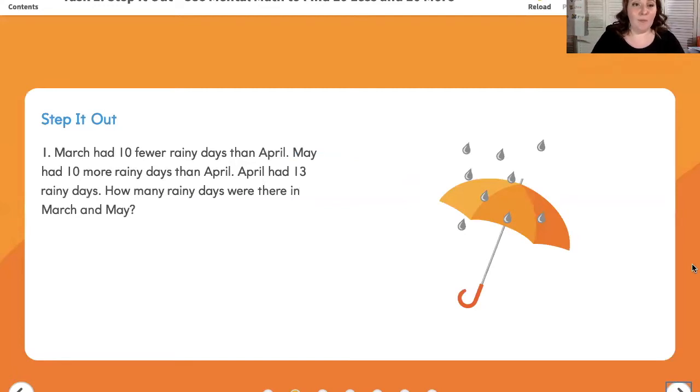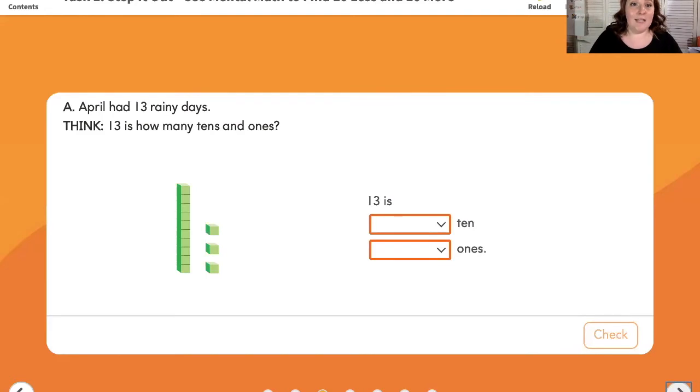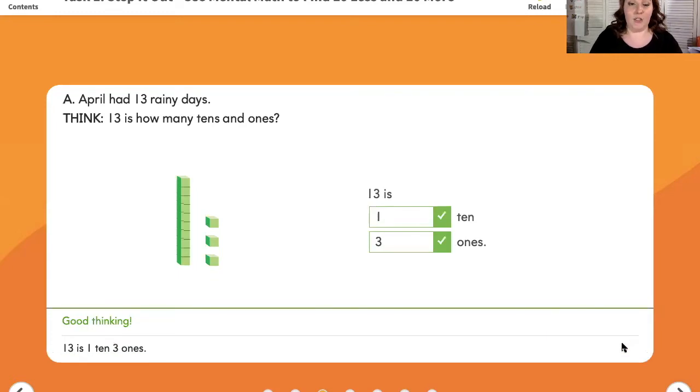Step it out. Number one, March had 10 fewer rainy days than April. May had 10 more rainy days than April. April had 13 rainy days. How many rainy days were there in March and May? Letter A says, April had 13 rainy days. Think. 13 is how many 10s and 1s? I can see here that I have one group of 10 and three 1s. 13 is made up of one 10 and three 1s.